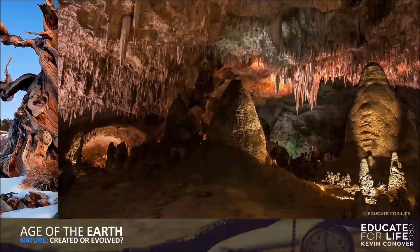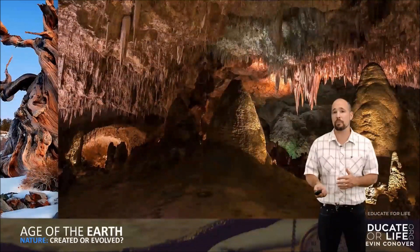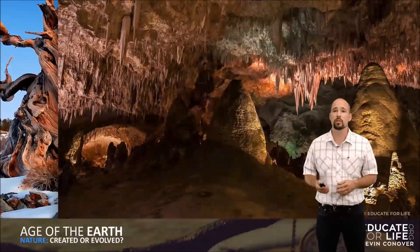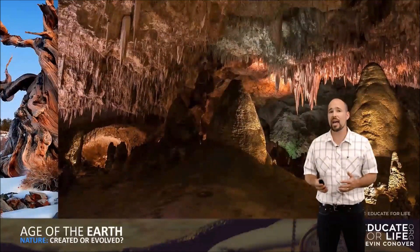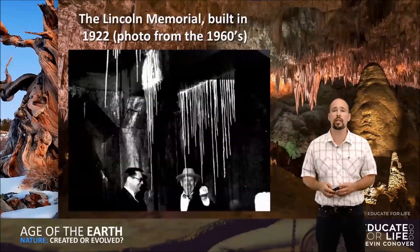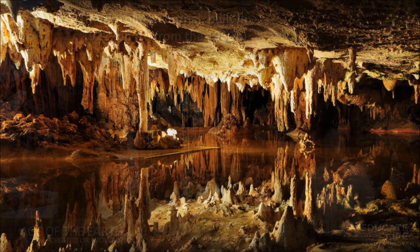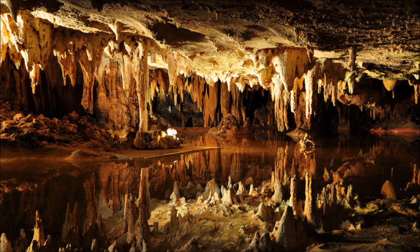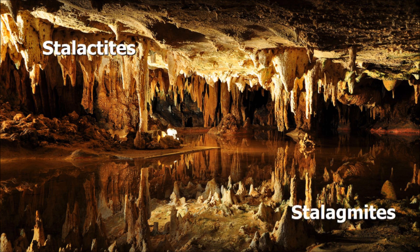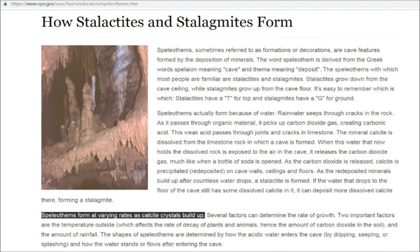If you've ever been to Carlsbad Caverns or other caverns with stalactites, many people believe stalactites and stalagmites take millions of years to form. But there's plenty of evidence they can form very quickly under the right circumstances. This is the Lincoln Memorial, built in 1922 — this photo was taken in the 1960s, and clearly these stalactites didn't take millions of years to form. First of all, nobody says they need to take millions of years to form. Stalactites contain a C for ceiling; stalagmites a G for ground. Any scientific website will tell you they form at varying rates — two main factors are the type of rock and the amount of precipitation.